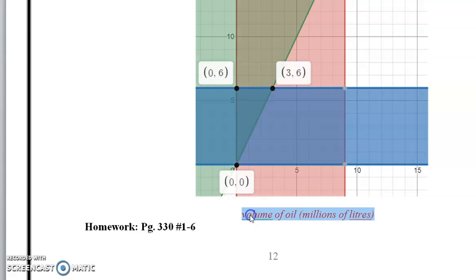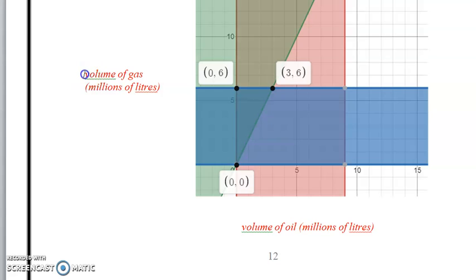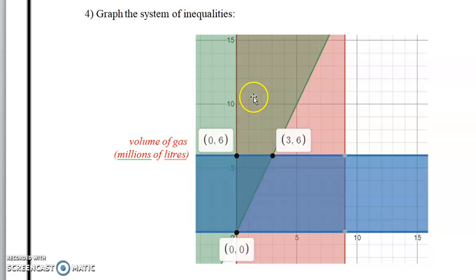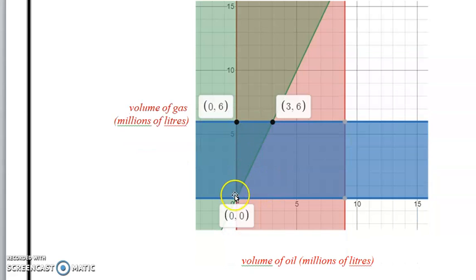And that goes with the same up here. So this would be the volume of gas, or gasoline, and again, in millions of liters. Now, sometimes you'll see this written on the side, going up. And that works as well. And that's graphing the system of equations. And the shaded, remember, your solution is the shaded area in between the overlap of all of these three points in a particular region.